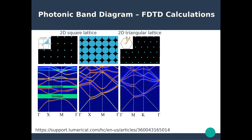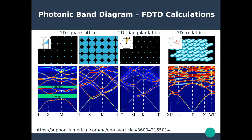Three-dimensional photonic crystals are also possible — for example an FCC lattice of dielectric spheres with n = 3.5. Due to its 3D nature, the band diagram is much more complex with many more symmetry points. In this particular case there is no band gap, but by adjusting parameters such as size, composition, and separation distance between nanoparticles, we can engineer and control the band structure to open a specific band gap.